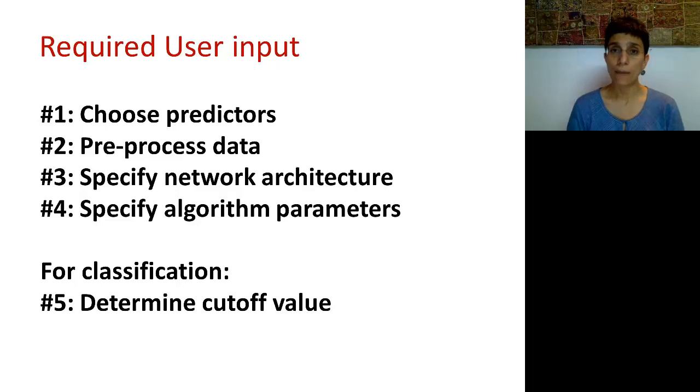Step four talks about some parameters, and we already talked a little bit about two main parameters, which is the learning rate and the momentum. And finally, if we're going to use a neural net for classification, then we're also going to need to specify a cutoff value. But that is something that we've seen with other algorithms as well.